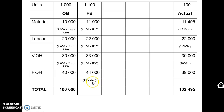Do you remember allocated fixed costs when we did absorption costing? The allocation rate — the predetermined fixed overhead allocation rate — is the budgeted fixed overhead of 40,000 divided by the budgeted units, giving 40 rand per unit, multiplied by the actual units of 1,100. That gives us the allocated fixed overheads. So this 44,000 represents allocated fixed overheads.